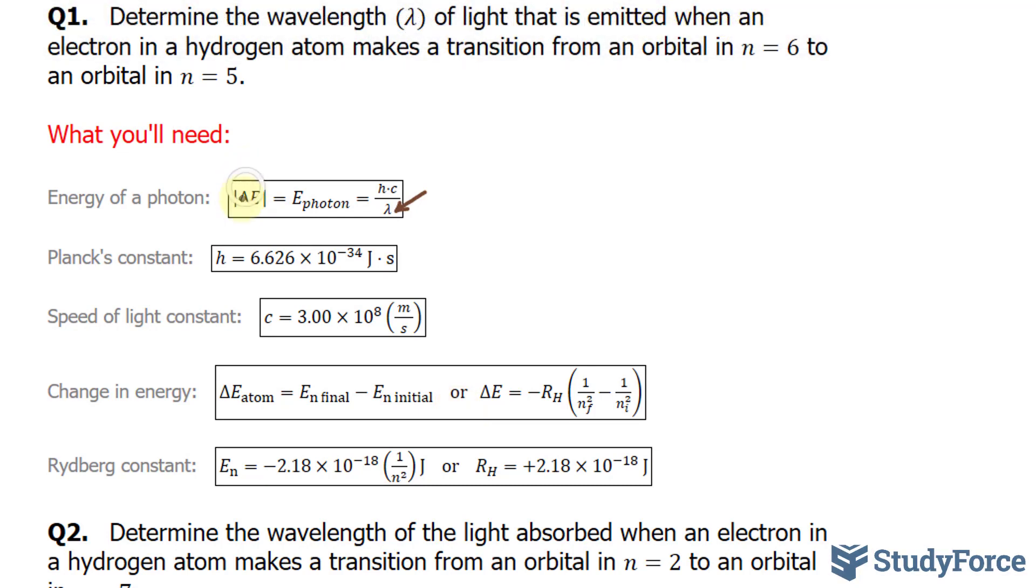We are looking for delta E and the relationship with delta E and hc over lambda is shown here. So I'll write down the absolute of delta E is equal to h, and that's 6.626 times 10 to the power of negative 34 joules times seconds. That's being multiplied to the speed of light, 3.00 times 10 to the power of 8 meters per second.